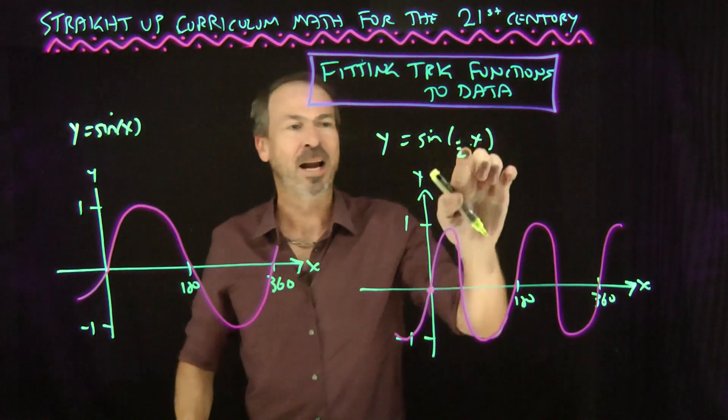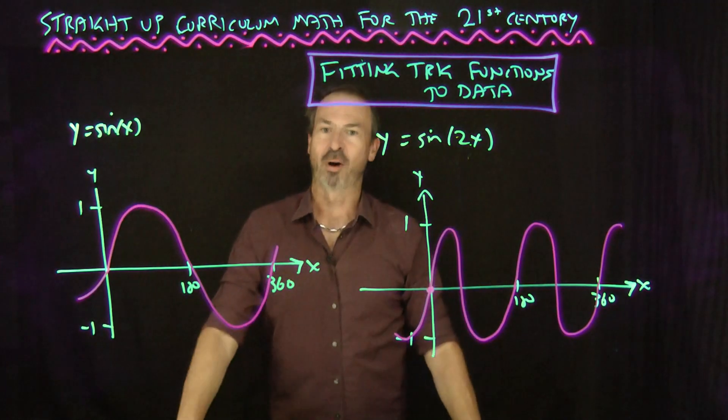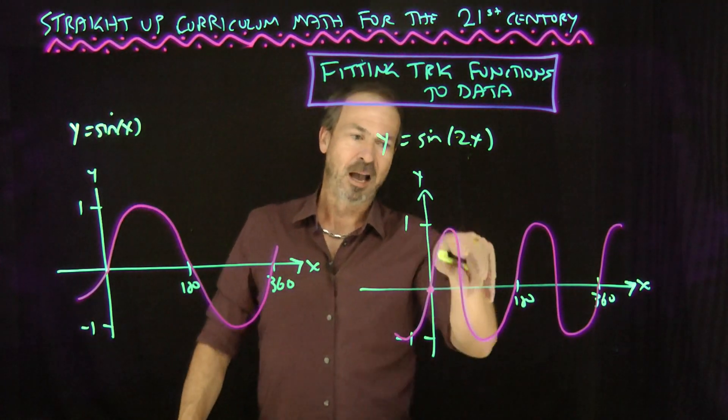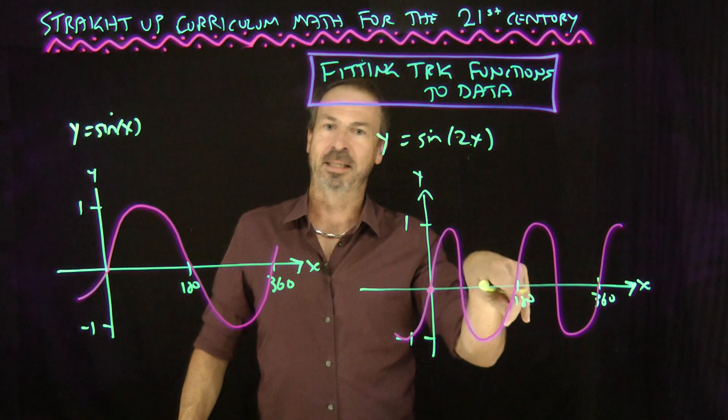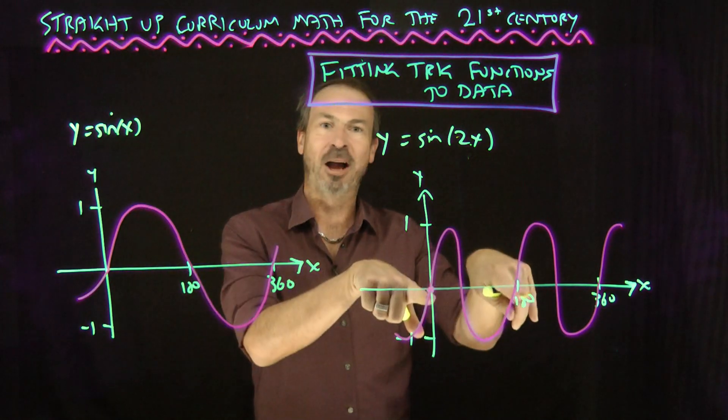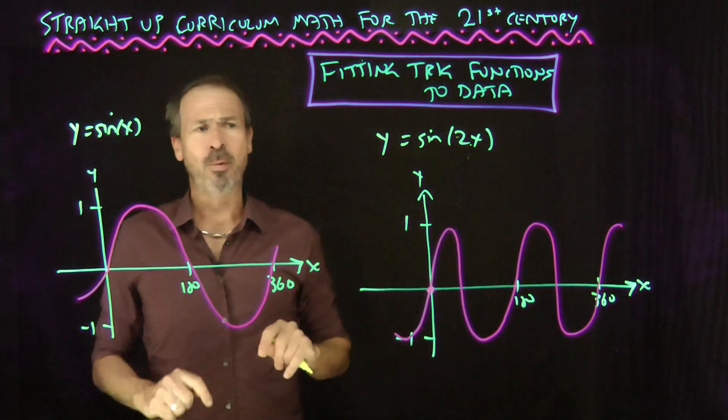You kind of see what's going on. One half of x will slow things down. I need x to have the value 720 before I get to sine of 360, before I get to one full cycle. So this is how you get to one full cycle at x equals 720.